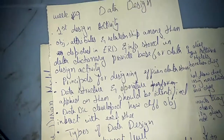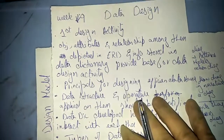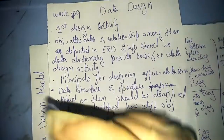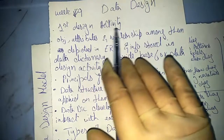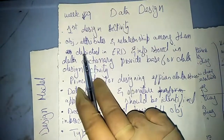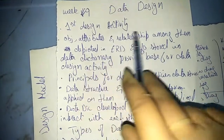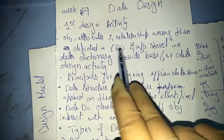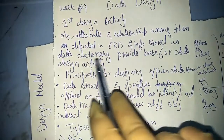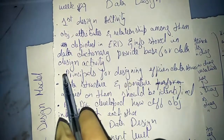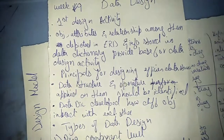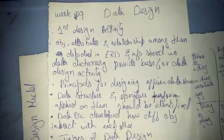The first design activity is data design. Object attributes and relationships depicted in ERD, and information stored in the data dictionary, provide the basis for the data design activity.